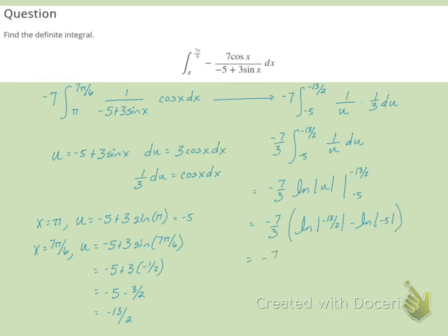So this will give us negative 7 thirds. The absolute values will make those arguments positive. So we'll have the natural log of 13 halves minus the natural log of 5. And then remember that using the rules of logarithms, this is negative 7 thirds times the natural log of 13 halves divided by 5.